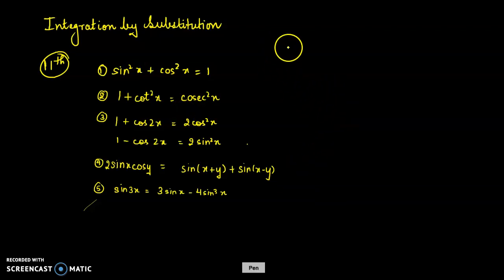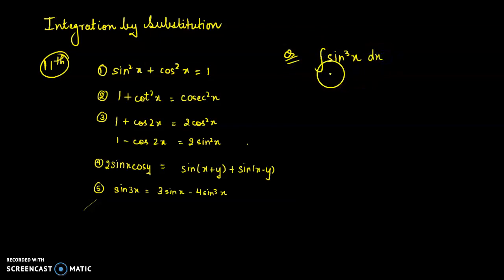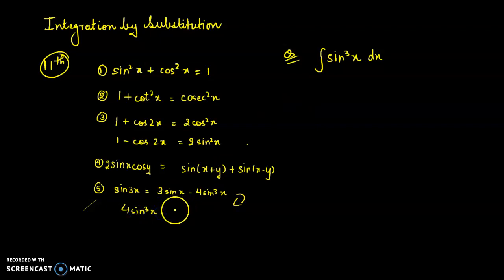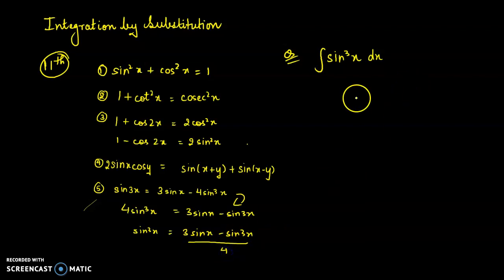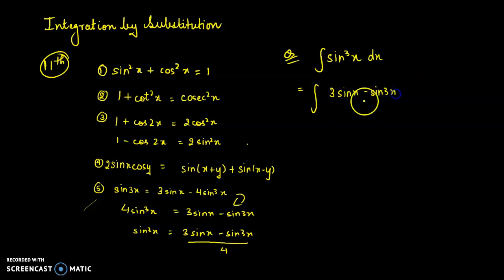For example, if I get a question like integration of sin³x, there is no direct formula for that. So you have to substitute. From the identity: 4 sin³x = 3 sin x − sin 3x, we get sin³x = (3 sin x − sin 3x) / 4. You then substitute this expression.